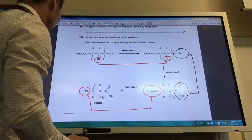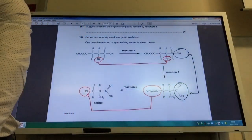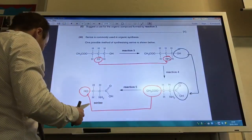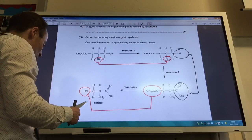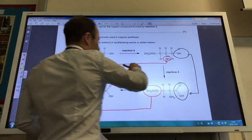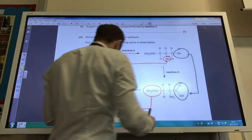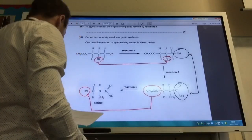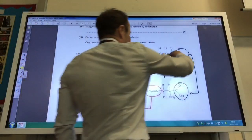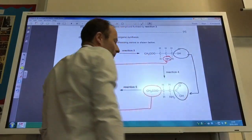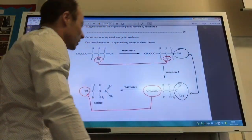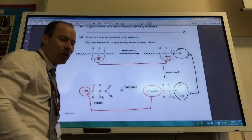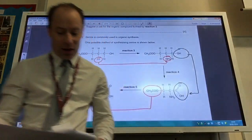If I run through the questions that come up: What reagent and conditions are used for reaction three? Well I've replaced Cl with NH2, so it's hot ethanolic ammonia that you would use for that one. What type of reaction is reaction four? Reaction four is an alcohol to a carboxylic acid, so of course it's oxidation. And reaction five, I've got an ester becoming an alcohol group, so that of course is hydrolysis.